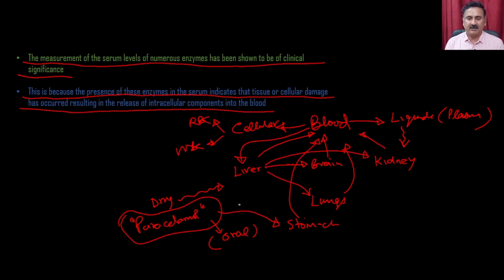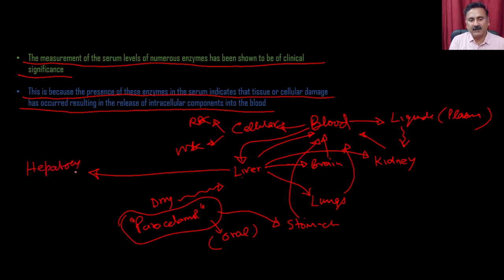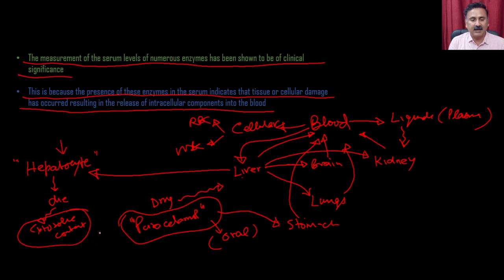Imagine a situation that you have taken a drug which goes into the stomach, then into the blood, then into the liver. Now this drug is actually a little cytotoxic. What happens is it is actually going to start causing a problem to the liver cells. The liver is made up of cells called hepatocytes. It starts killing the hepatocytes, and as a result they will actually release their cytosolic content, which is going to get released into the blood.